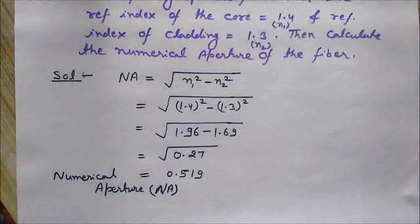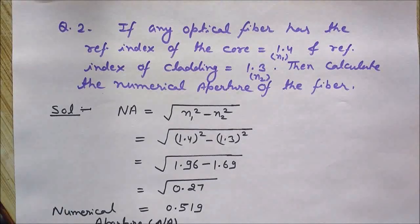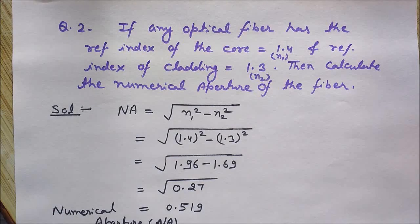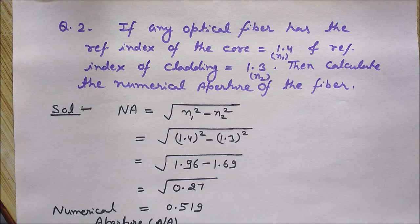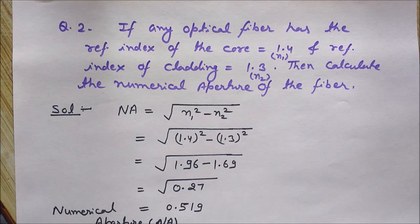So now let's see another problem. Here the question is if any optical fiber has the refractive index of the core equals to 1.4 (denoted by n1) and the refractive index of the cladding is 1.3 (denoted by n2), then I want to calculate the numerical aperture of the fiber. So in this case we have the refractive indices of both core and cladding and I want to calculate the numerical aperture from these refractive indices.